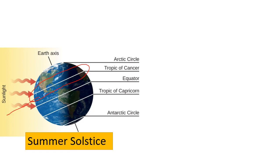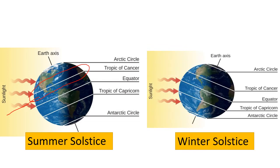In the winter solstice, the Sun is directly above the Tropic of Capricorn, which usually falls on December 21st. This means this tropic is the farthest point south on earth where the Sun is completely overhead at noon.